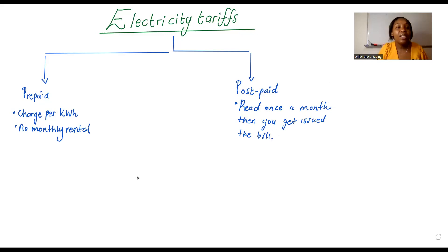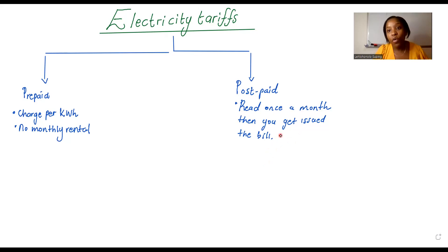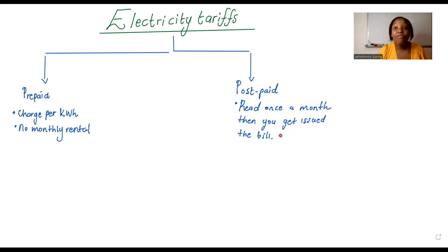What I have written on the board: with the prepaid meter system, you get charged per kilowatt-hour of electricity used and there is no monthly rental. With the postpaid system, the meter is read once a month, then you get issued a bill showing how much electricity was used and the cost for that electricity. It is also important to note that with the postpaid meter system the charges fit into two basic categories.